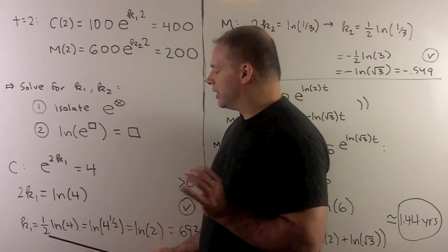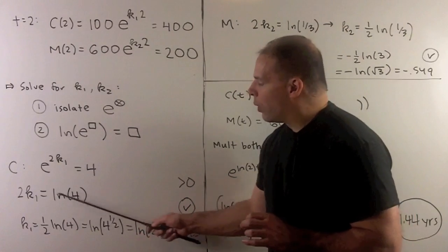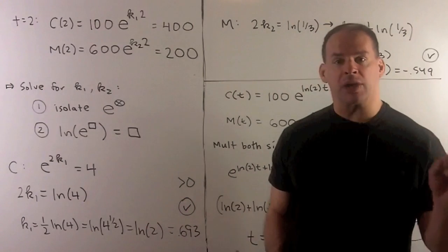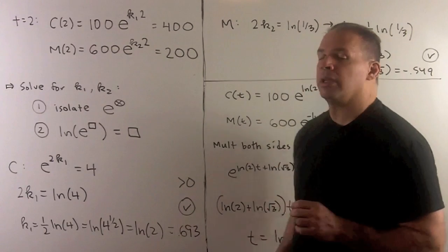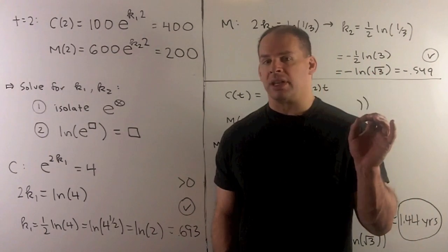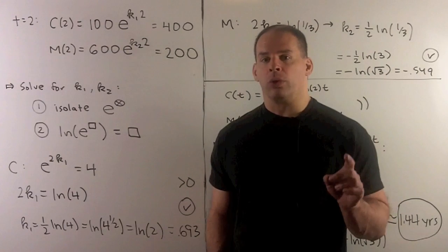So if k₁ is equal to one-half natural log of 4, I can move the one-half to the inside by our exponent rule. So we get natural log of 2. If I go to a calculator, that's roughly 0.693. That's positive. So that confirms that we have growth.